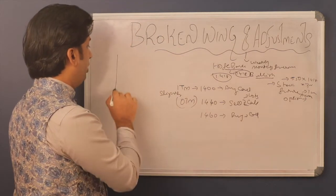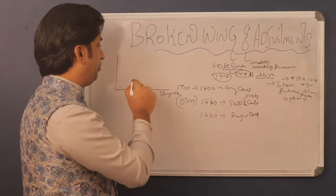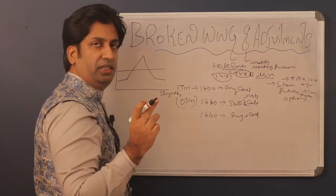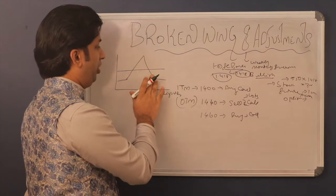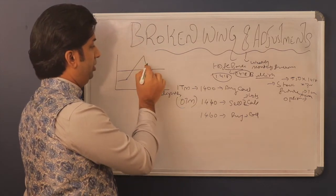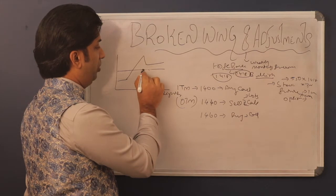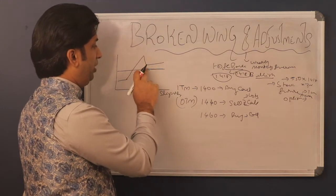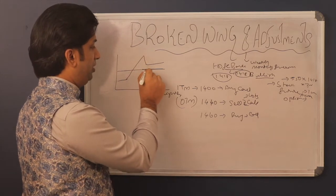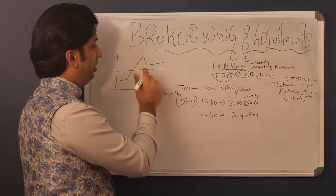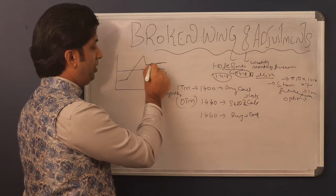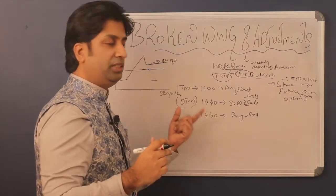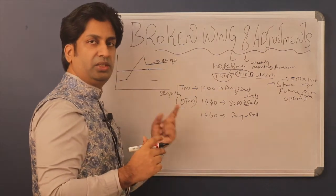I'll show you the payoff graph. This is how the iron fly strategy looks — iron fly is for sideways movement. In the broken wing butterfly, one wing is broken, and the maximum profit is on one side. This is how the payoff graph looks when you construct this strategy.